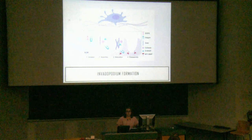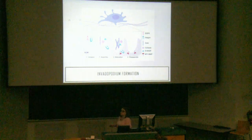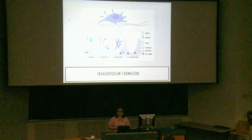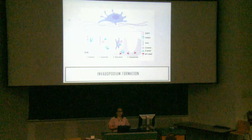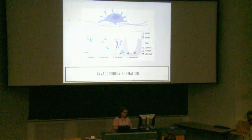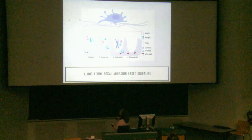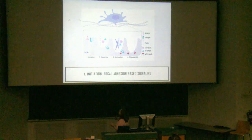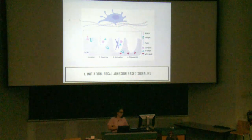Invadipodia are F-actin protrusions that reach into the extracellular matrix to help degrade it. In order for tumor cells to maintain their invasive phenotype, they must constantly assemble and disassemble invadipodia at the leading edge of the cell. This occurs in four steps: the first step is initiation, involving focal adhesion-based signaling with the ECM through recruitment of integrins and receptor tyrosine kinases.